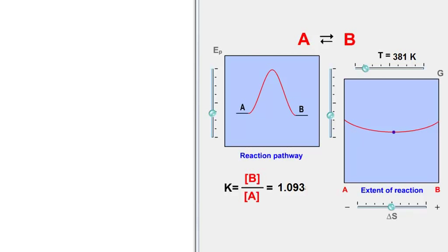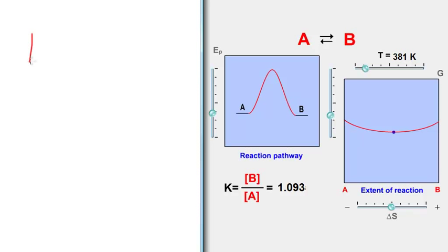I'd like to discuss the relationship between the energetic stability of reactants versus products, the entropic stability, free energy, and the equilibrium constant. I have a simulation here to illustrate my thinking. The first thing I want to do is to remind you of the relationship between the equilibrium constant and enthalpy and entropy. We know that the equilibrium constant is equal to e to the minus delta H over RT plus delta S over R.